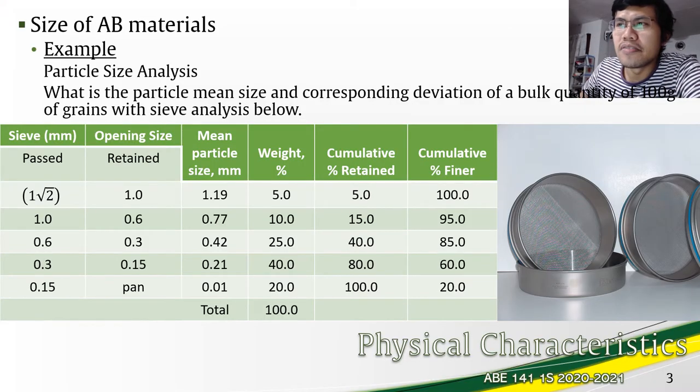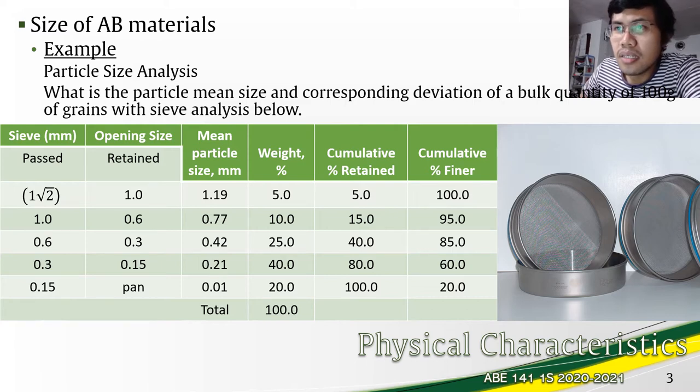We now further understand the use of particle size analysis with this example of sieves or the sieve data. We have here sieve data for a certain AB material. What is being asked is the particle mean size and corresponding deviation of a bulk quantity of grains.